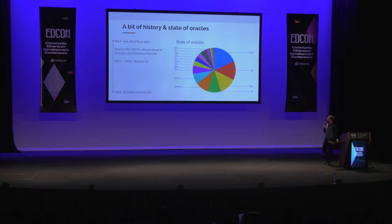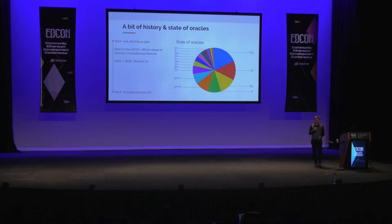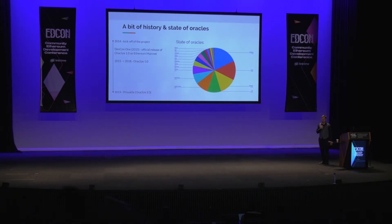This pie chart is probably too small for you to see the details, but it shows the distribution of use cases that we have seen with Oracle-based smart contracts. We basically tried to look on GitHub for projects based on Oracleize, which is the most widely used Oracle today. There are approximately 1,000 projects, each with its own use case. We tried to define some categories. As you can see, gambling is accounting for approximately one-fifth — 18% — of the number of projects.